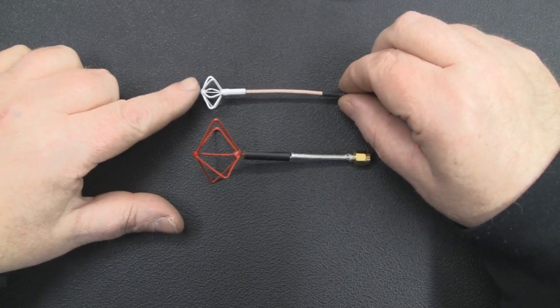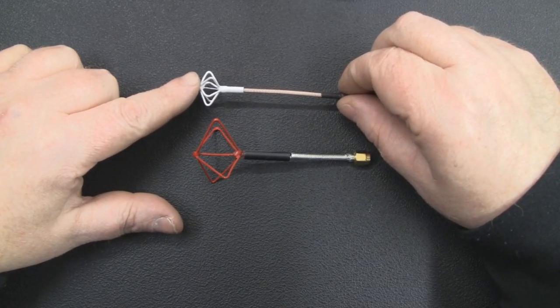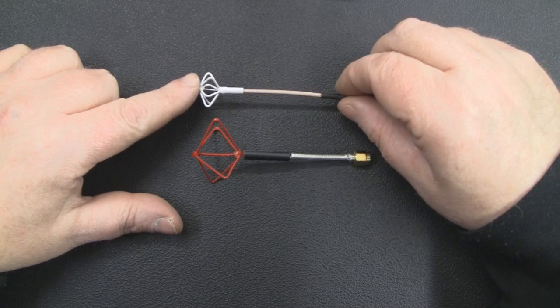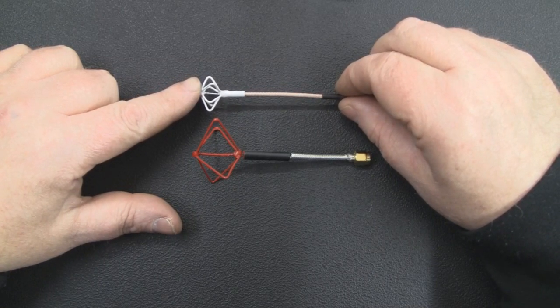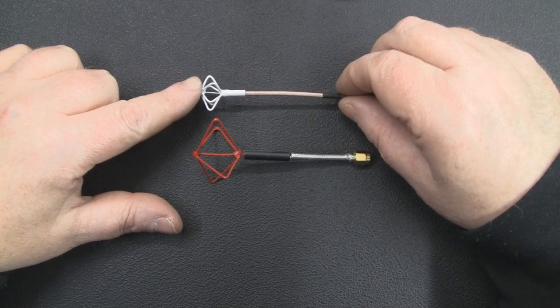In this video we're going to construct a blade antenna for the 5.8 gigahertz frequencies, to be used with a quadcopter or model aircraft for FPV video.